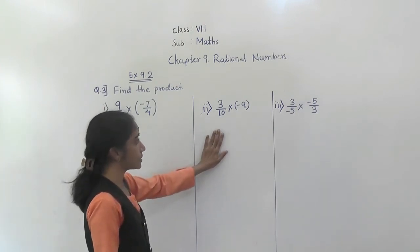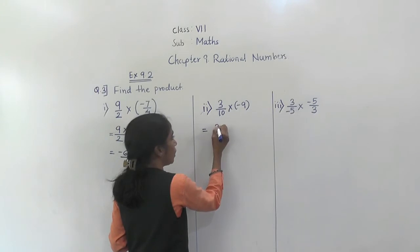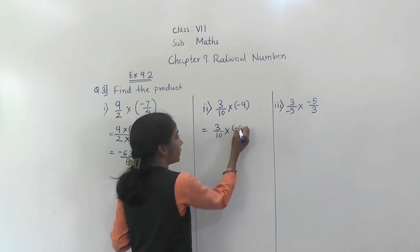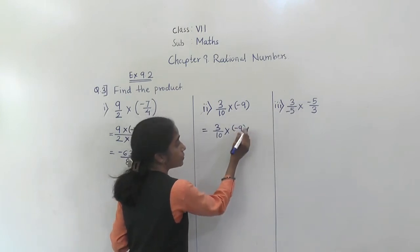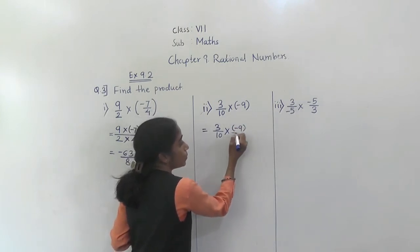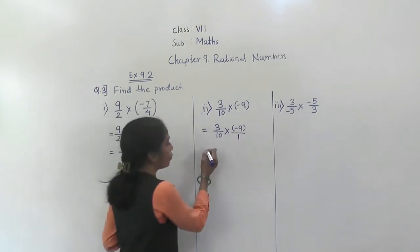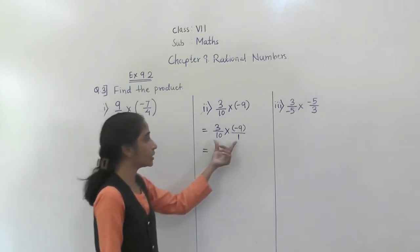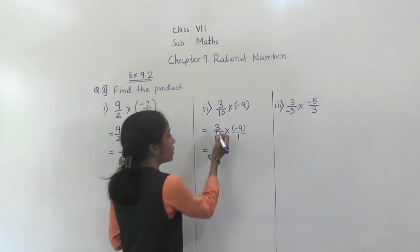Now let's solve the next example. Which is 3 upon 10 multiplied by minus 9. Into bracket minus 9. There is no denominator, means 1. Now what we have to do? Multiply the numerators and do the multiplication of the denominators.